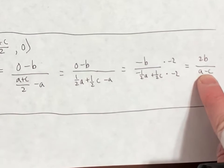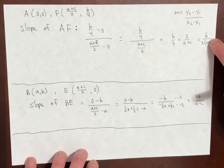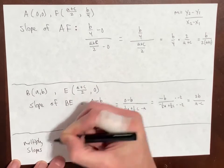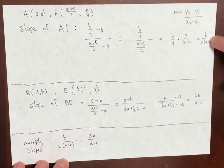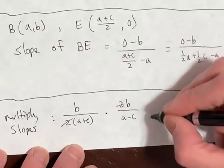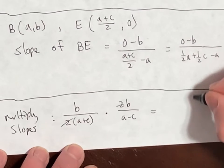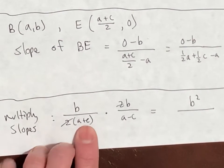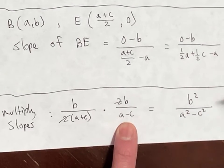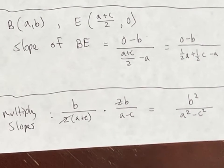We want to take this slope here and this slope here and multiply them. We took the slope of one, we took the slope of the other. When you multiply, that 2 knocks out that 2. In the top you have B times B, which is B squared. In the bottom you have A plus C times A minus C, which if you distribute is A squared minus C squared.